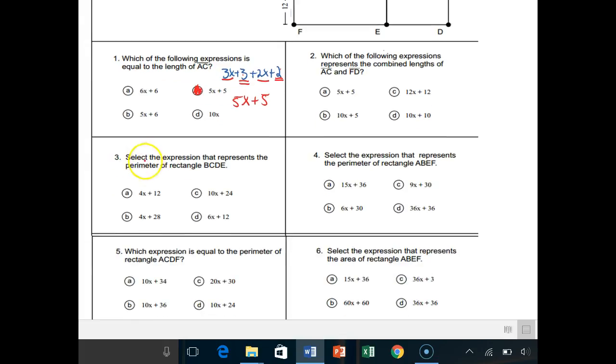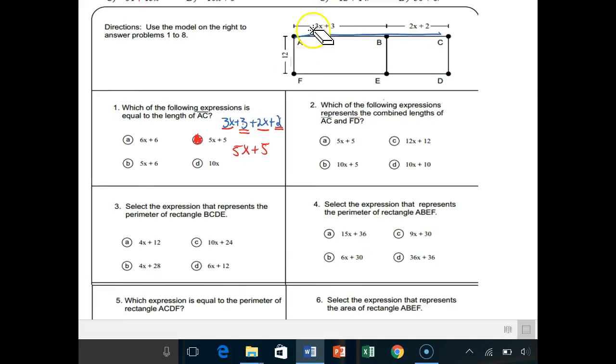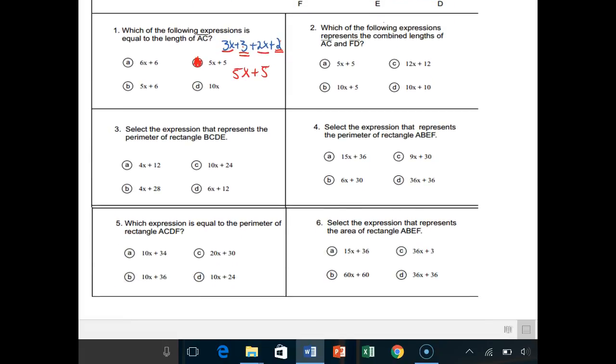Number 3, select the expression that represents the perimeter of rectangle BCDE. So let's go over here. Here's the perimeter, B to C to D to E. Now we've got to fill in some stuff. If this is 2x plus 2, that means this right here is 2x plus 2. And if this is 12, that means this right here is 12 and this right here is 12. So perimeter just means you need to add up everything around.